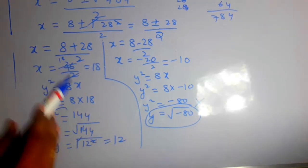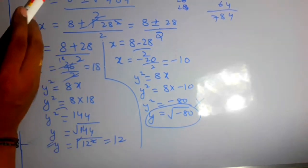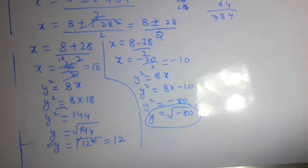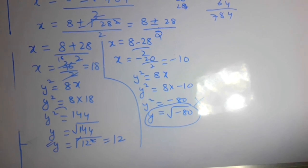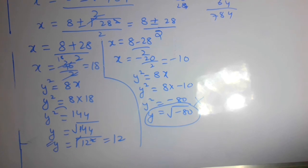Therefore x equals 18 and y equals 12. The larger number is 18 and the smaller number is 12. Thanks for watching. Please subscribe to our channel for regular updates and share this information with your friends.